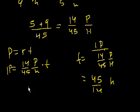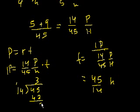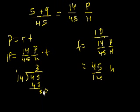And how many times does 14 go into 45? 14 goes into 45 three times. 3 times 14 is 42. And you have another 30. And then 14 goes into 30 two times. 2 times 14 is 28. We get 3.2 hours, and that's choice D.